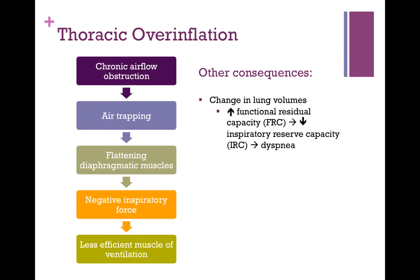Another important aspect of the disease is overall thoracic overinflation. This is caused by chronic airflow obstruction, which results in air trapping and ultimately causes flattening of the diaphragmatic muscles. This flattening results in a negative inspiratory force and less efficient muscles of ventilation. Consequences include a change in lung volumes — specifically an increase in functional residual capacity and a decrease in inspiratory reserve capacity — ultimately leading to dyspnea.